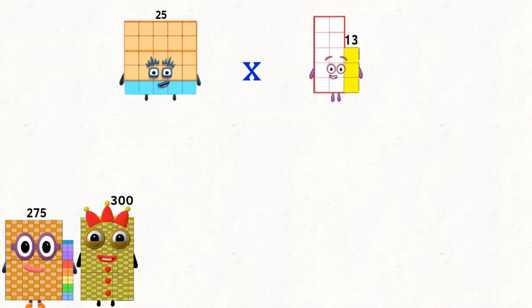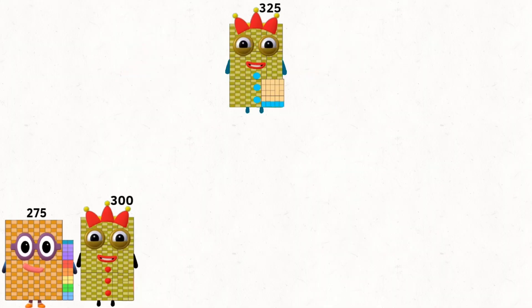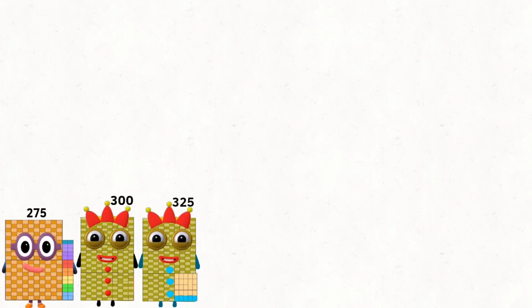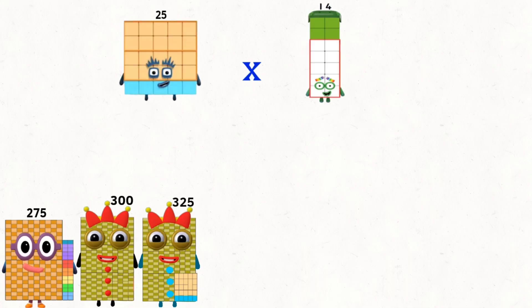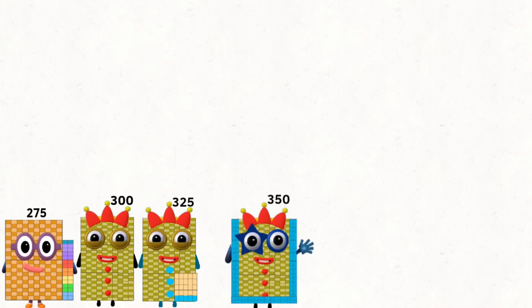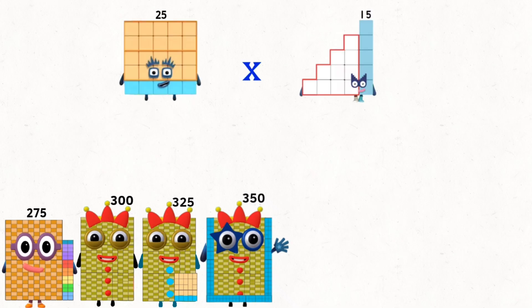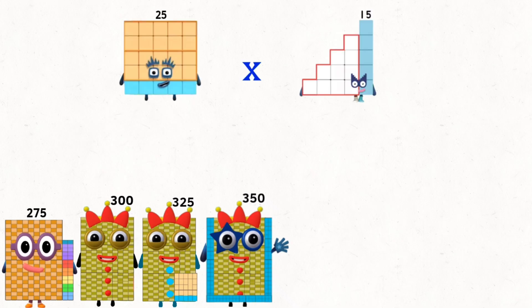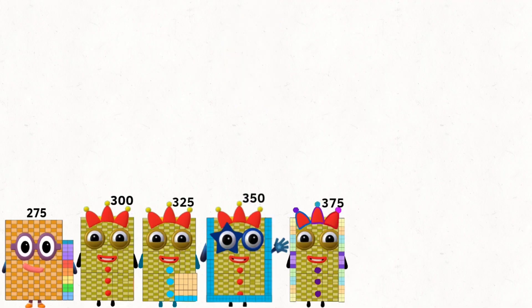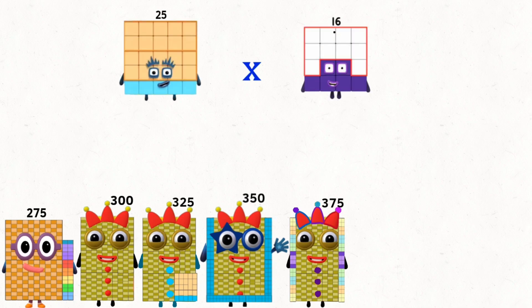25 times 12 equals 300. 25 times 13. 25 times 14 equals 300. 25 times 15 equals 300.